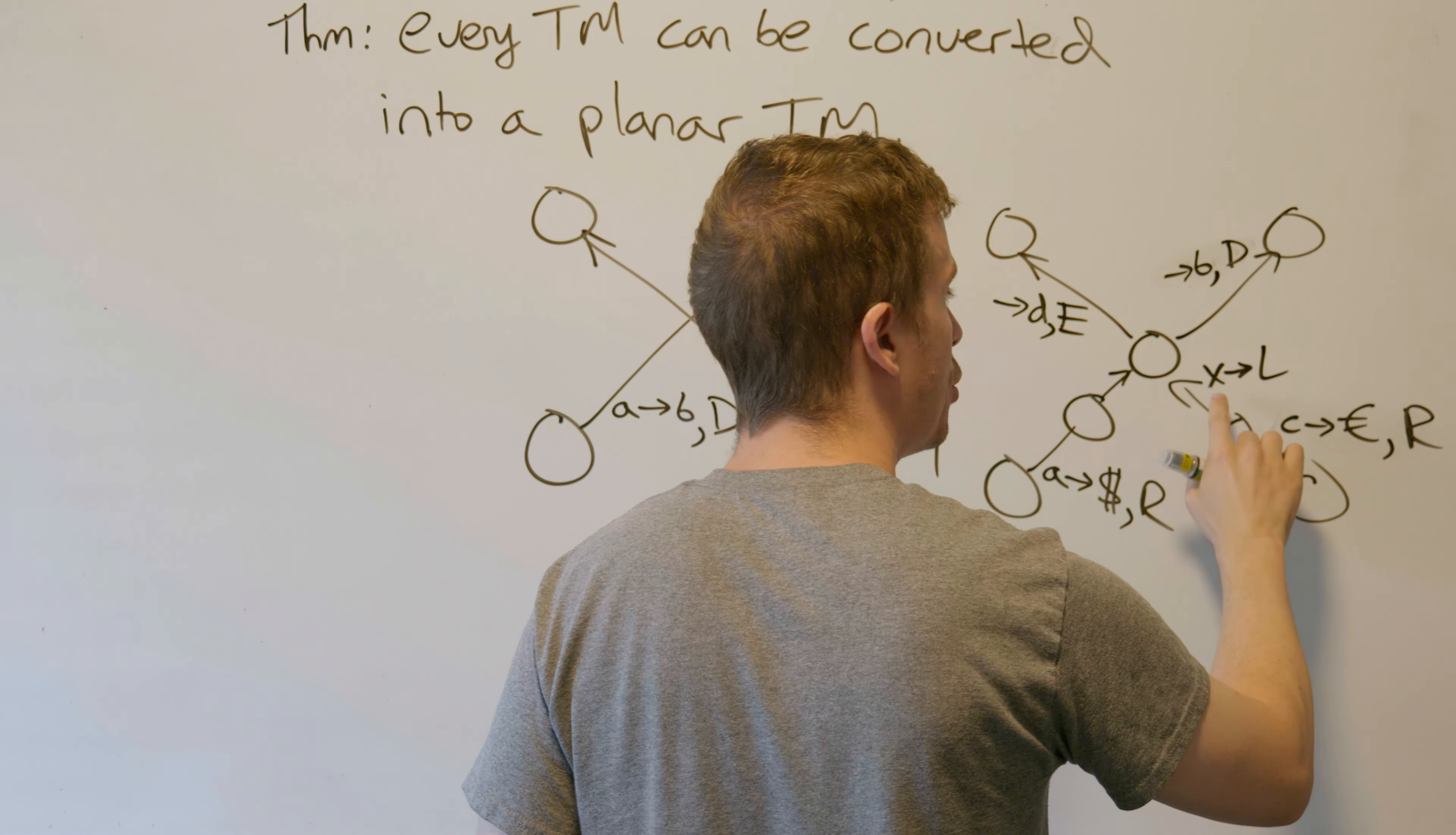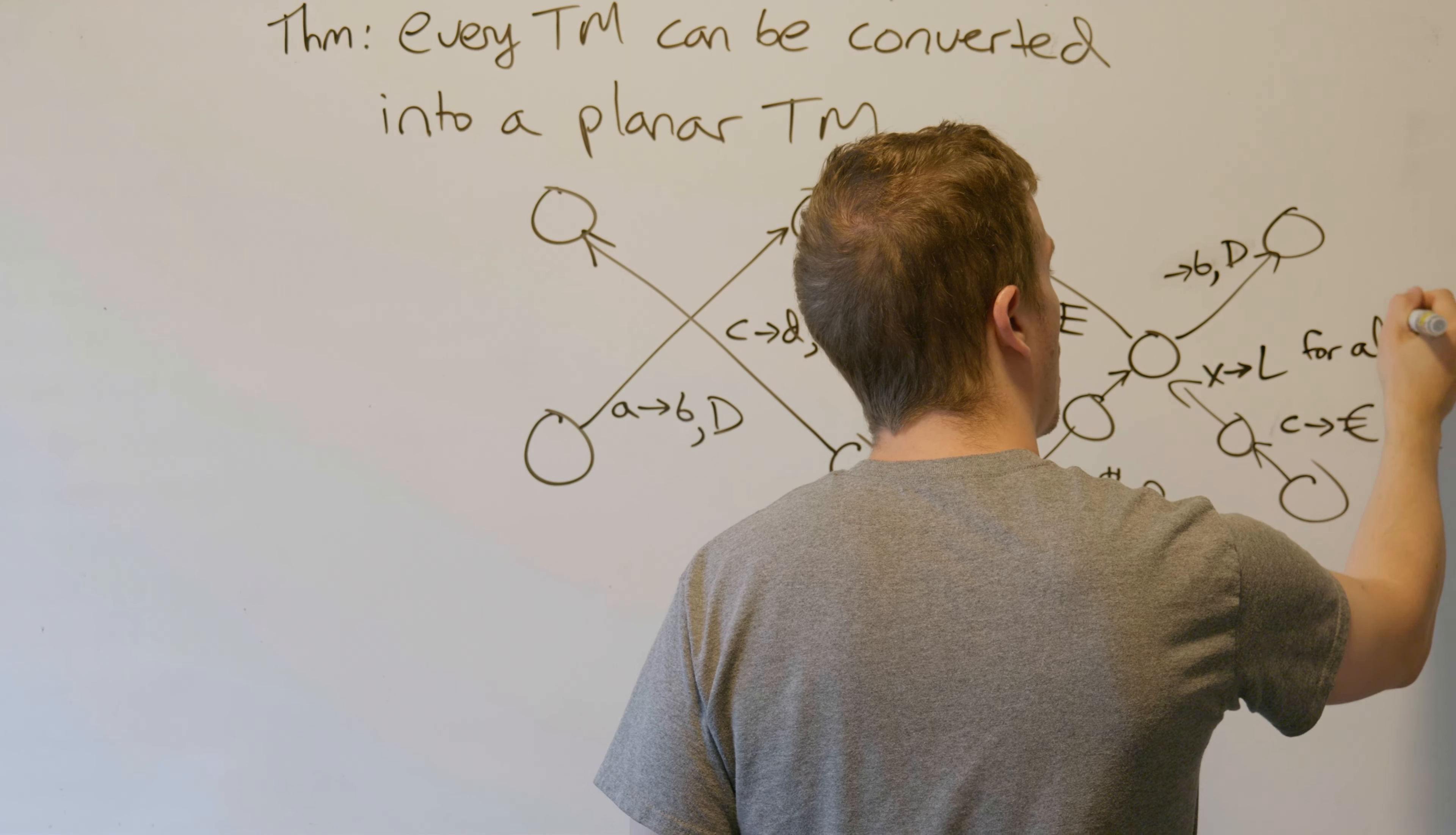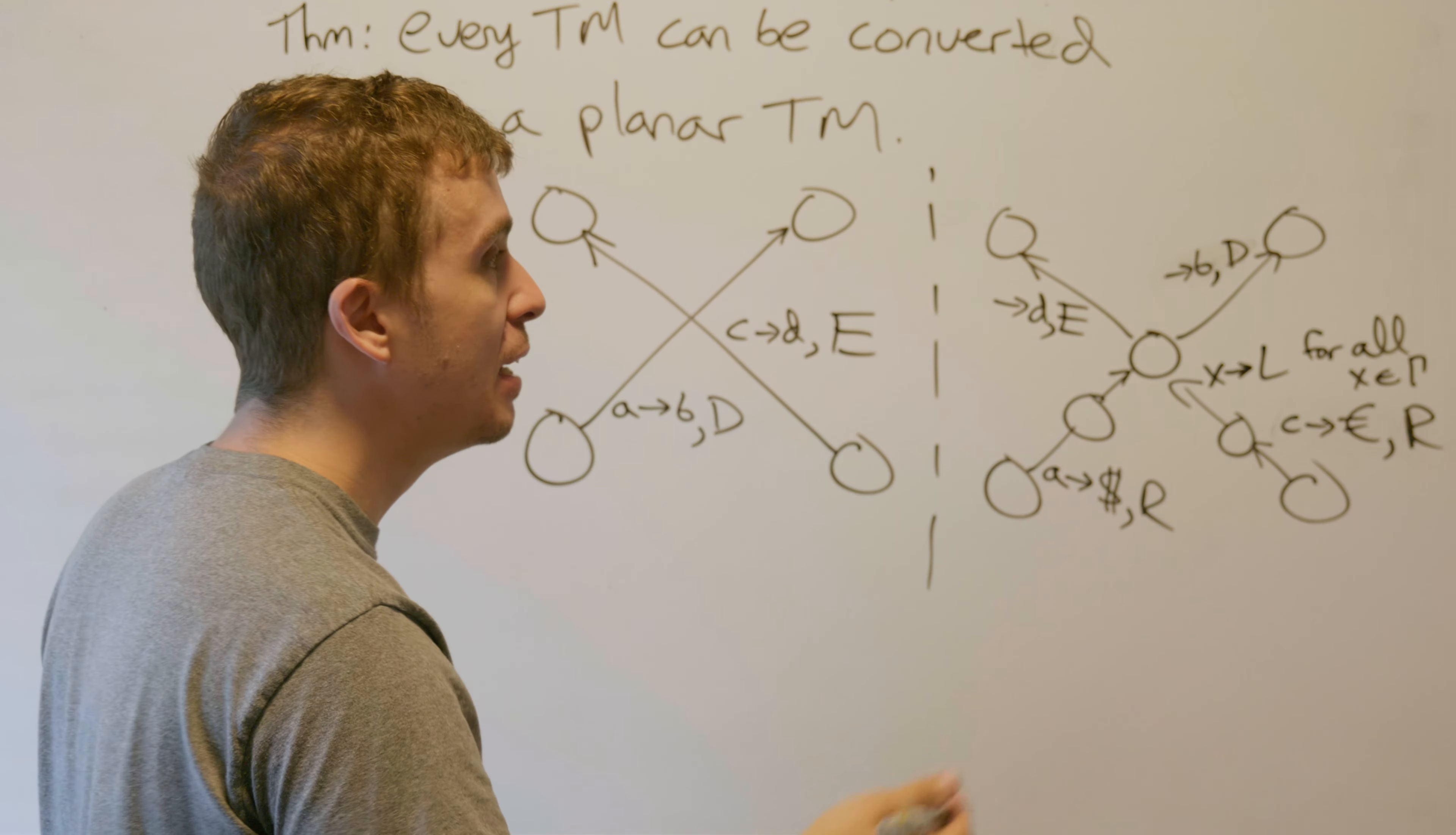We add a transition, whatever we see, you go left for all X in the tape alphabet. Similarly over here too. This one's also an X move left for every tape symbol X.